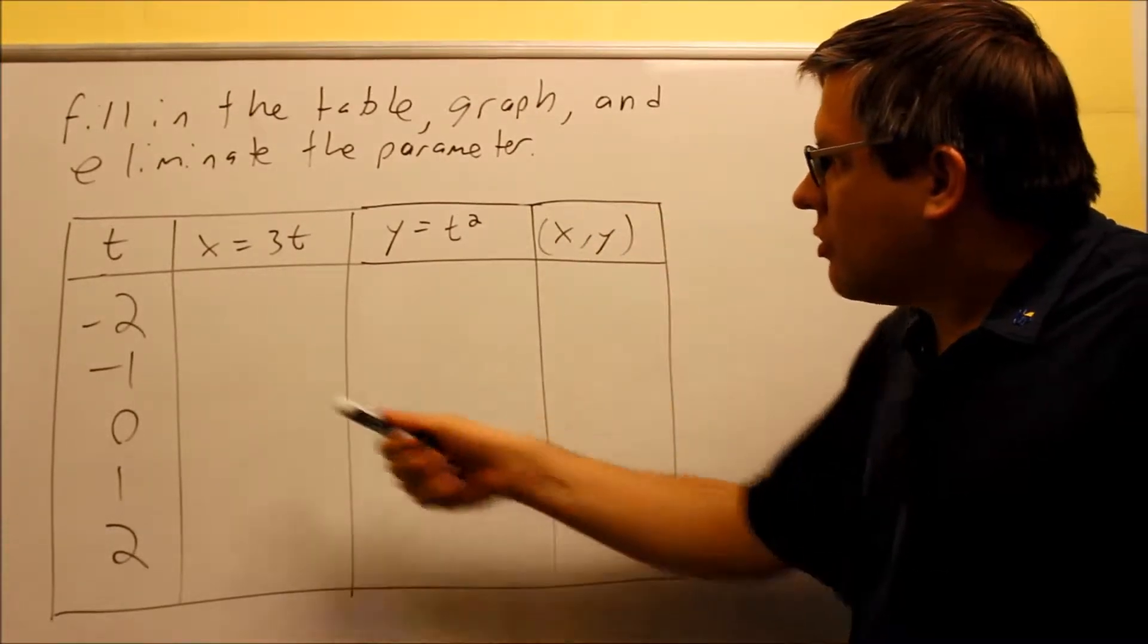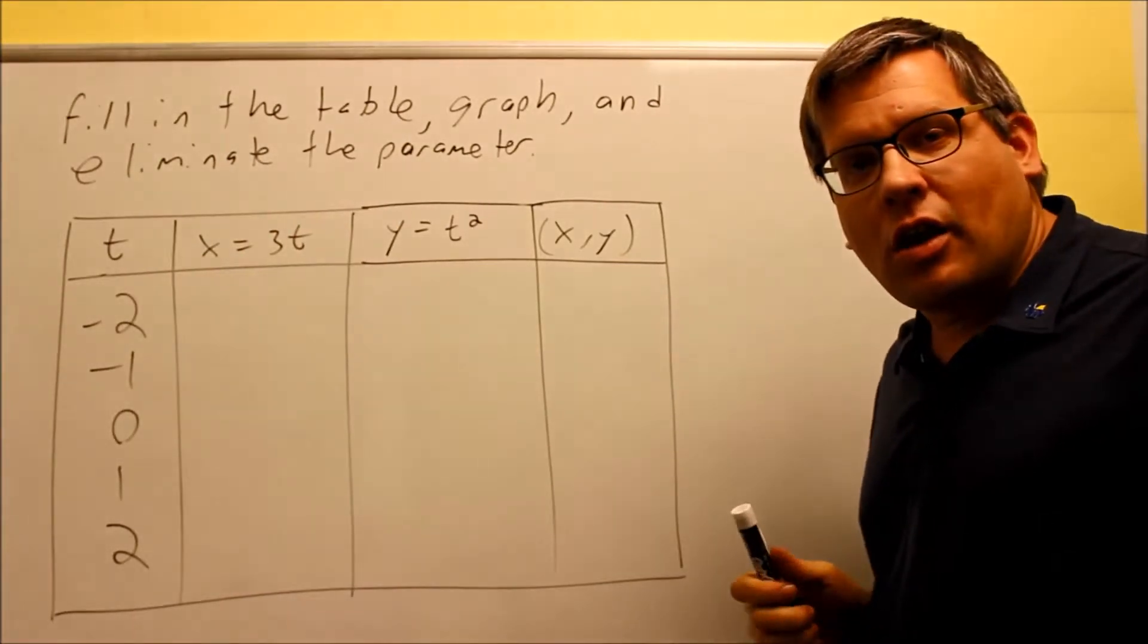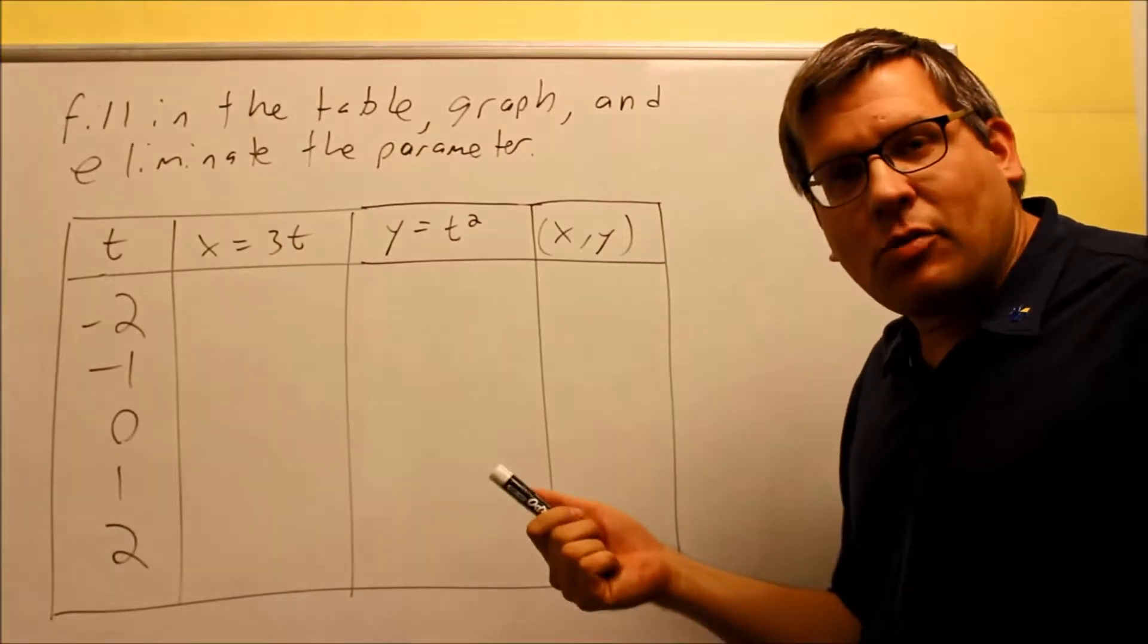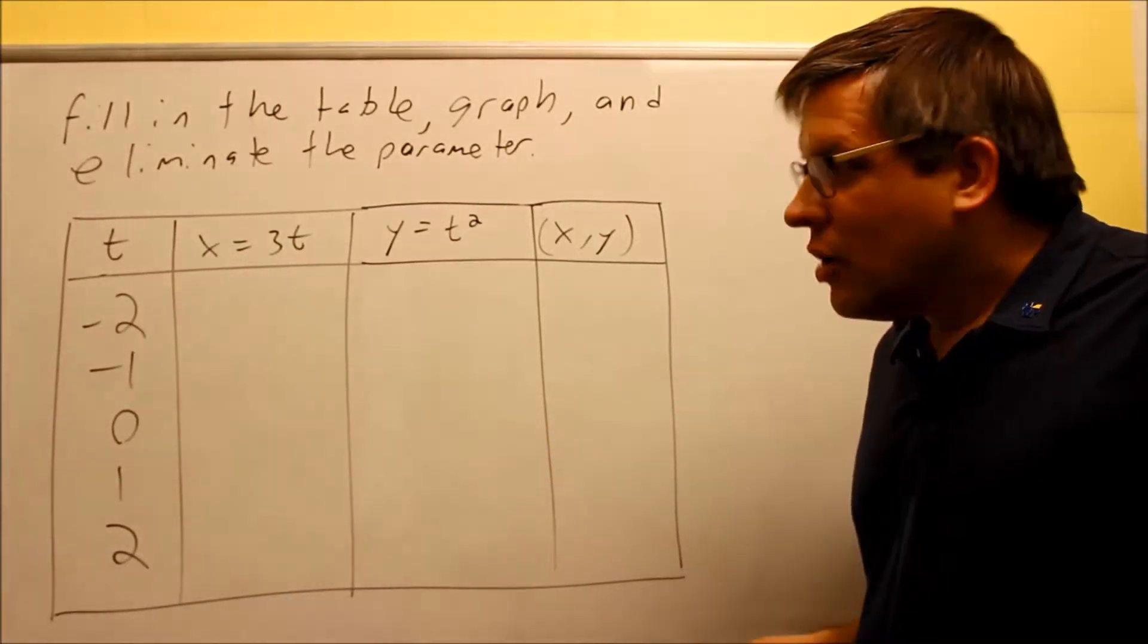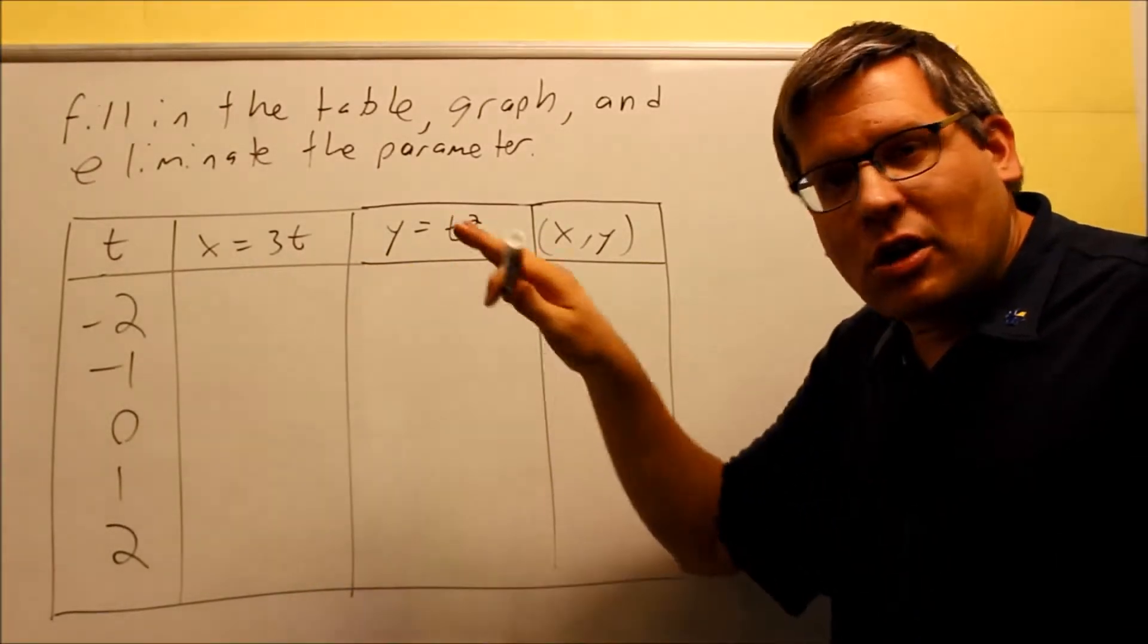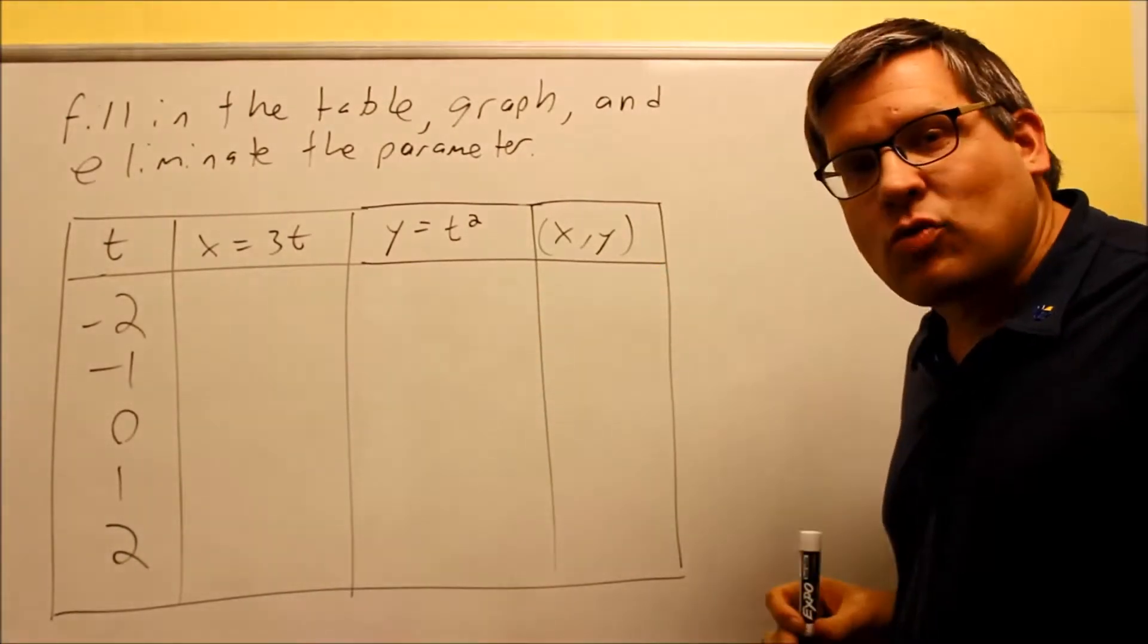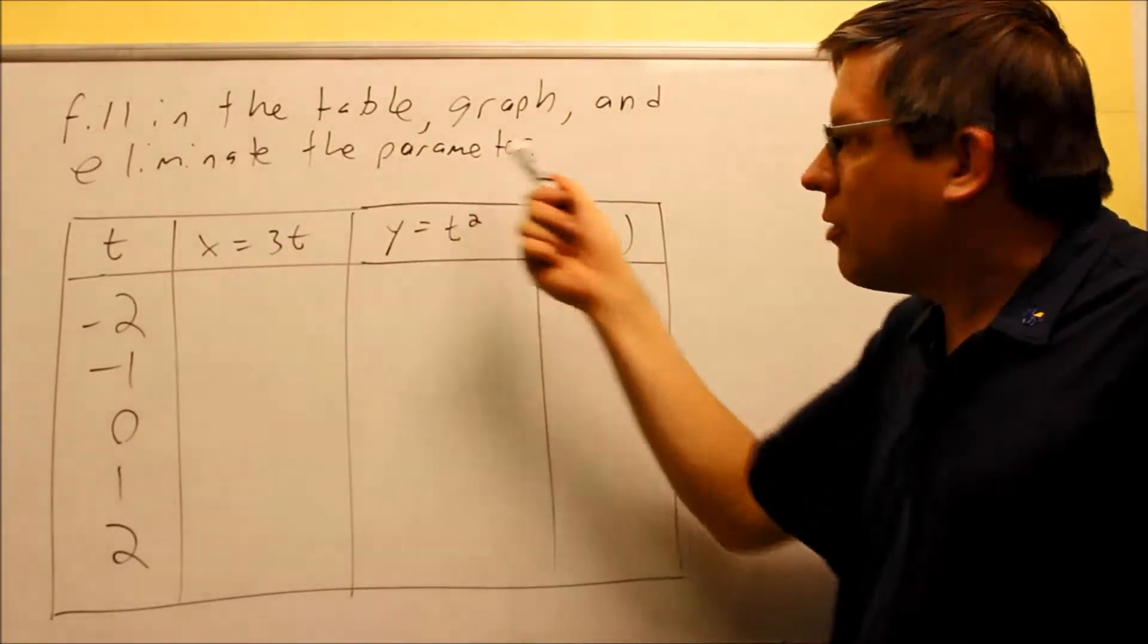So what this one wants us to do is fill in the table. The t values are provided. In my class, the t values should be given to you also. You're going to put the values for t in each of these. What's going to happen is you're going to get a value for x and a value for y. That's going to give you your x,y coordinates. We're going to plot those. And then later, we're going to eliminate the parameter.